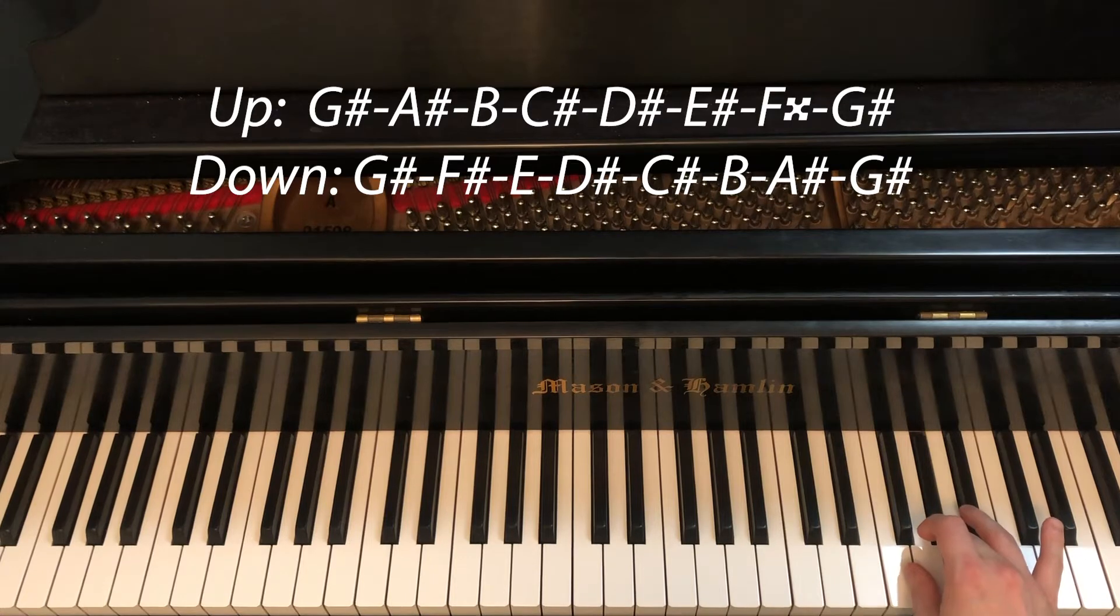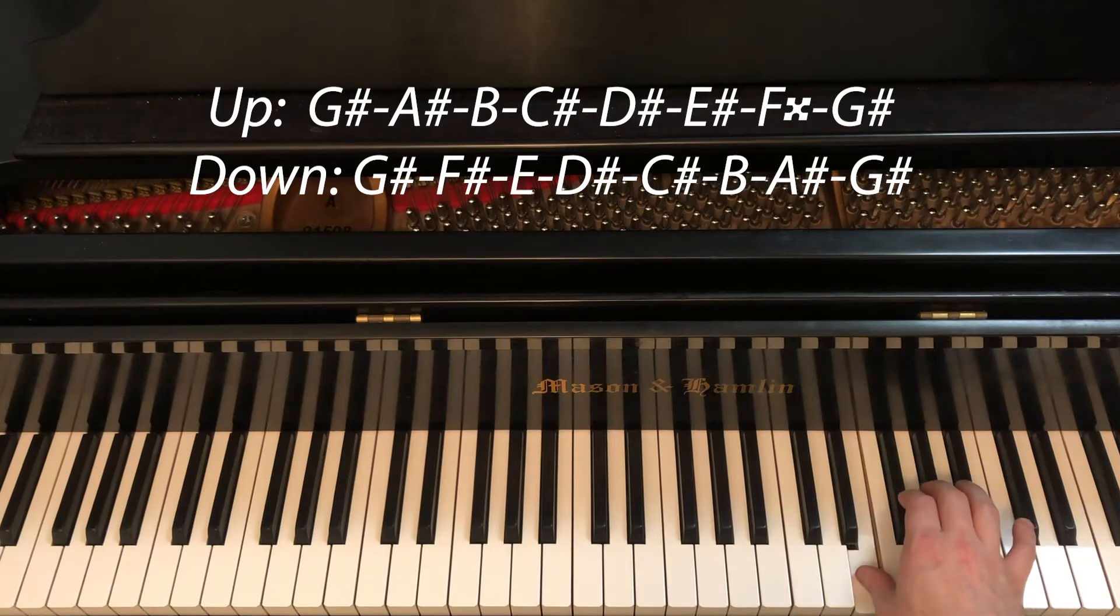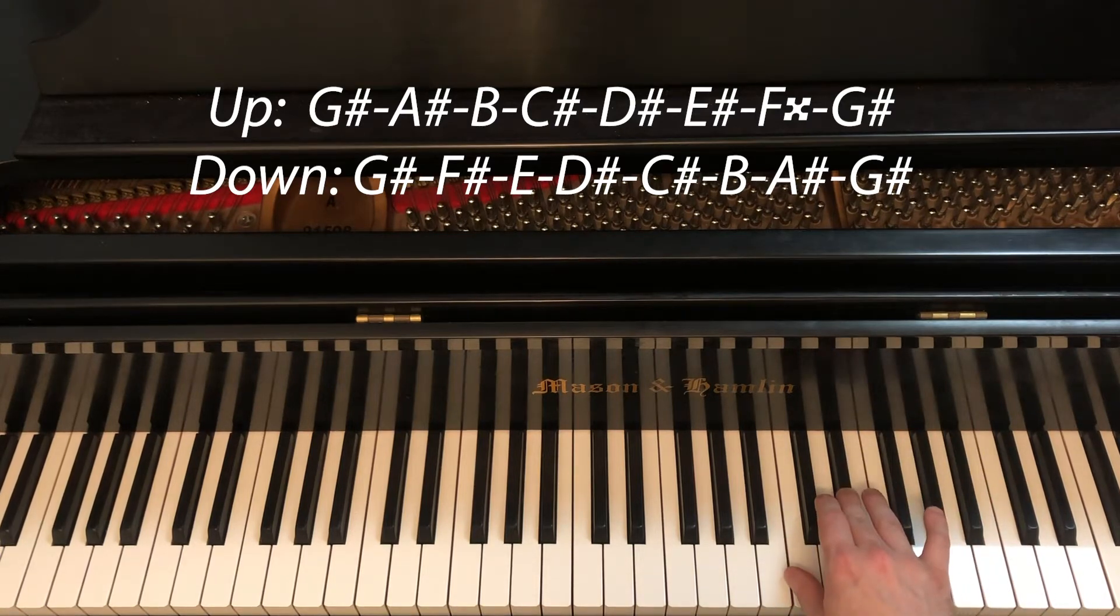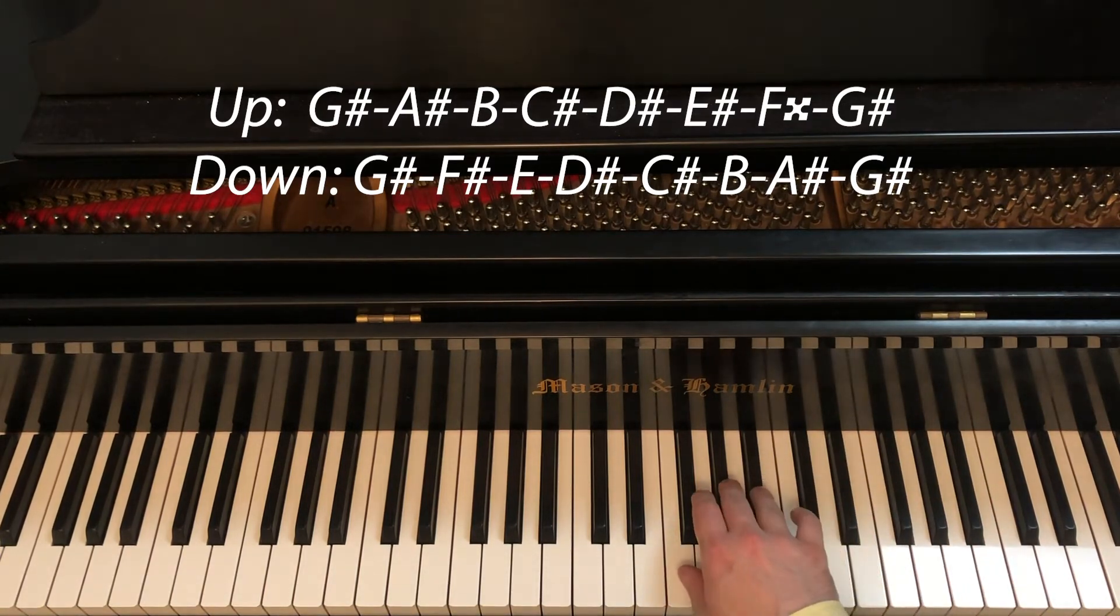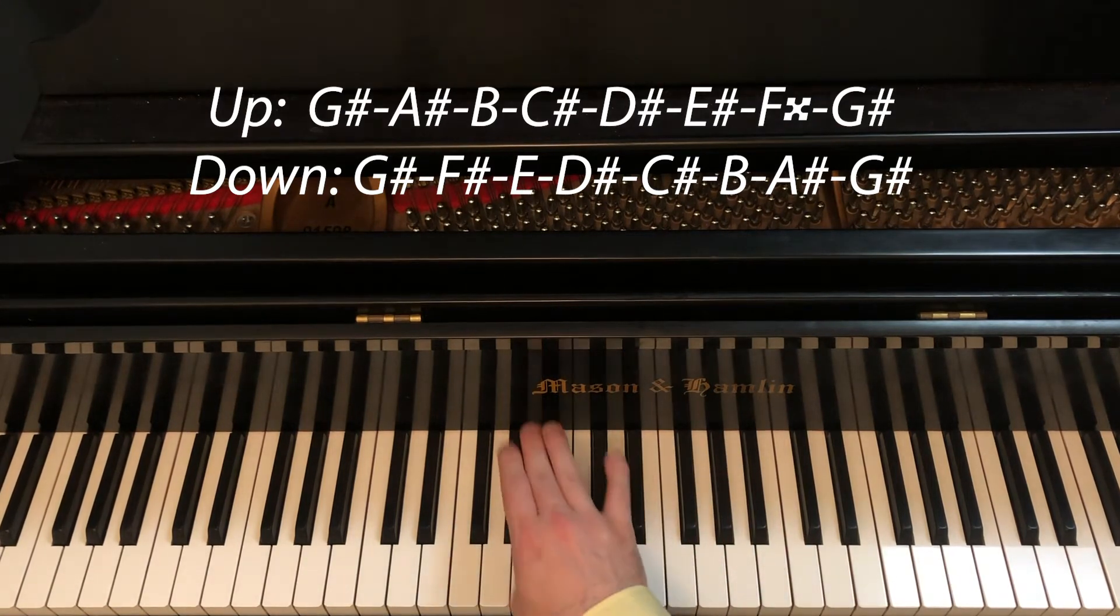Now coming down, we have the same fingering, but of course different notes. So 3-2-1 on G-sharp, F-sharp, E-natural. Then 3-2-1 on D-sharp. 4-3-2-1 on A-sharp. 3-2-1 on D-sharp. Then 3-2 to finish.